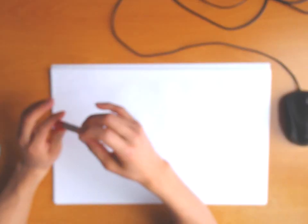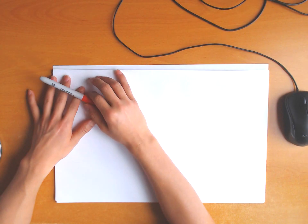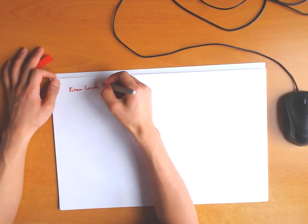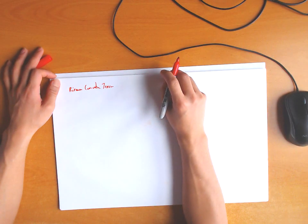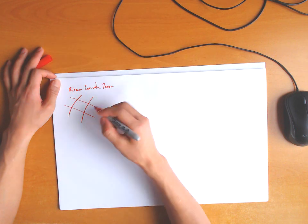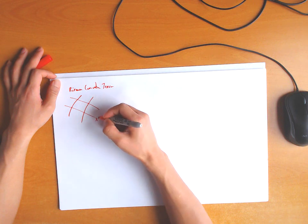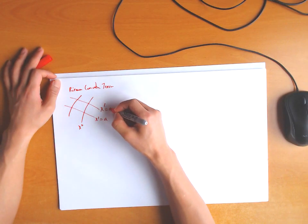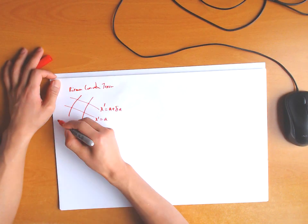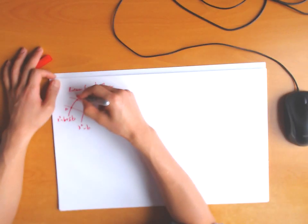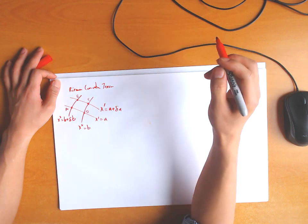Let me teach you about the Riemann Curvature Tensor. Suppose we start with a grid on a four-dimensional manifold — any manifold where we define a coordinate system. We call the coordinates x1 and x2. We start with some constant a, then x1 becomes a plus delta_a; similarly b, x2 equals b plus delta_b. We define a point so a, b, c, d.